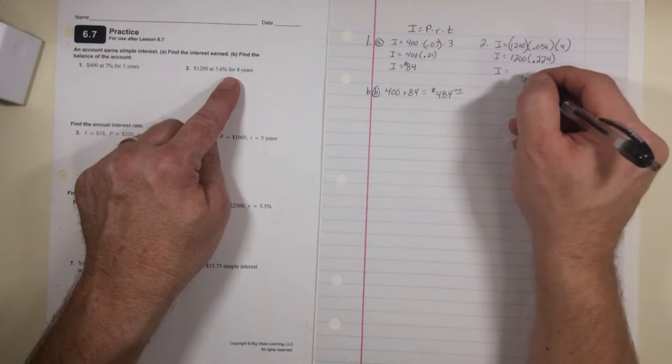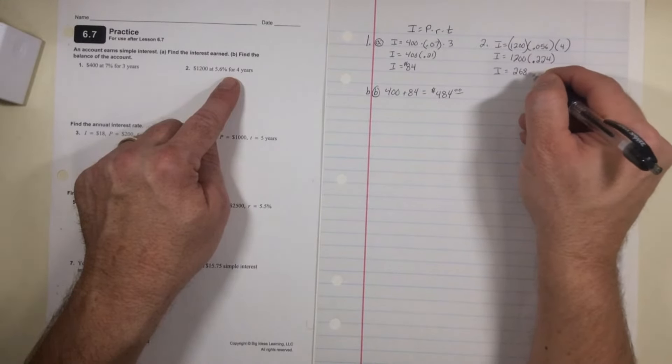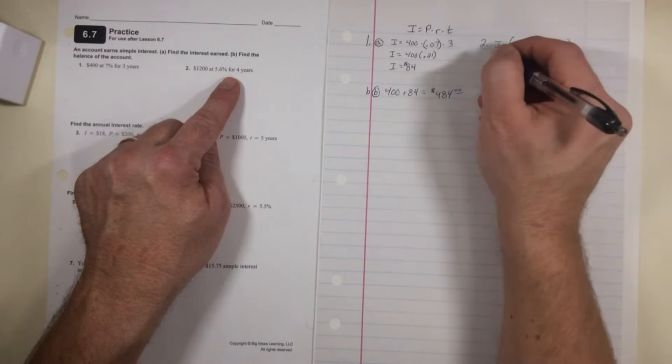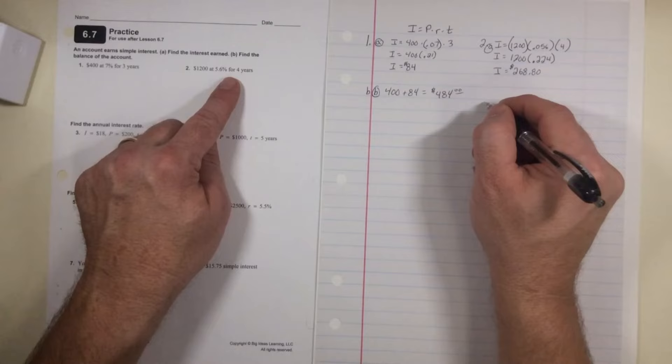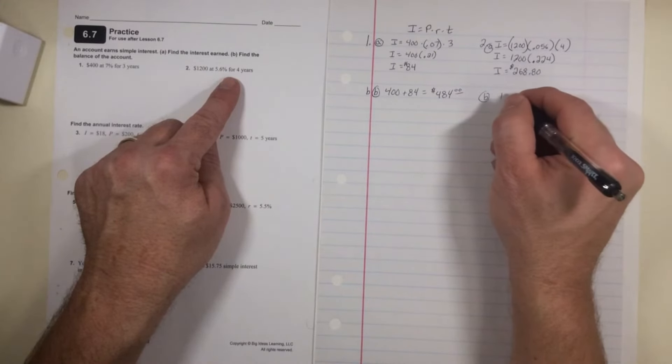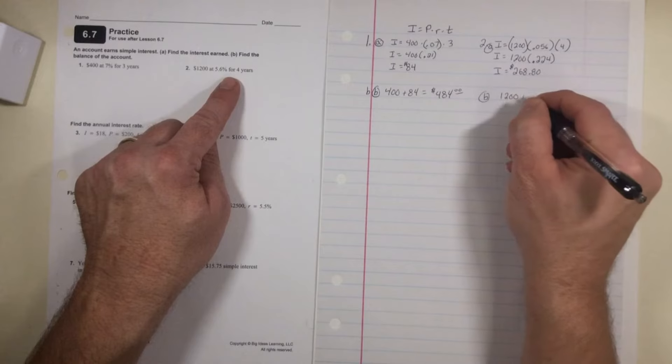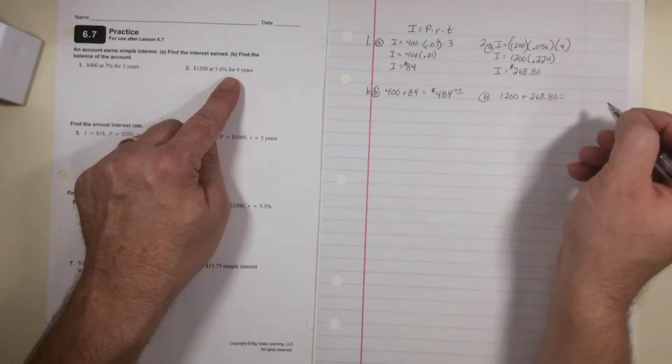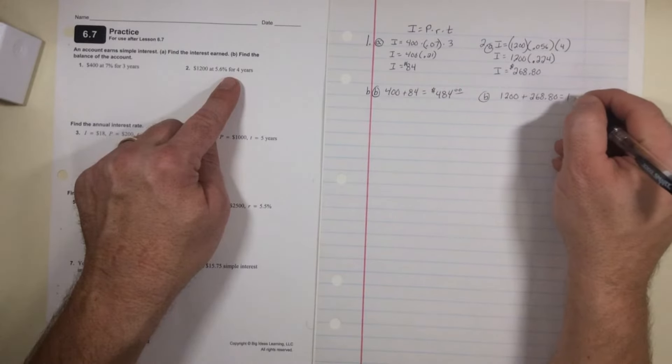And the interest I would receive would be $268.80. That's the interest, that's part a. Part b, I take my $1,200 that I put in, I add on the $268.80 interest, and it gives me a new balance of $1,468.80.